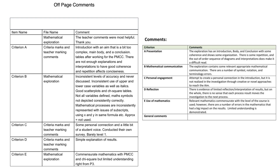Criterion C is personal engagement. There is some personal connection and a little bit of student voice; the student conducted their own survey, but it was barely level one. Just doing your own survey doesn't give you an automatic two. There was an attempt to create a personal connection in the introduction but it is not realised through creative or novel approaches to reach the aim.